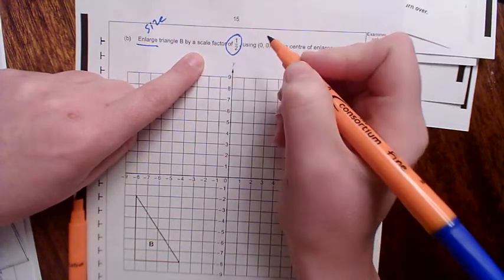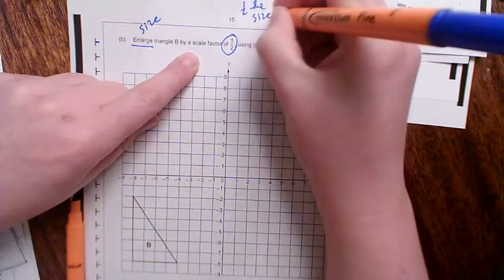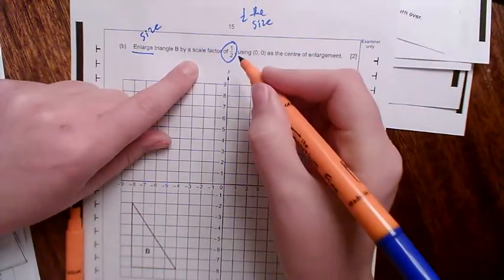in this case, the scale factor is a half, and so it's going to be half the size. So essentially, this triangle has got to be half the size of the original.